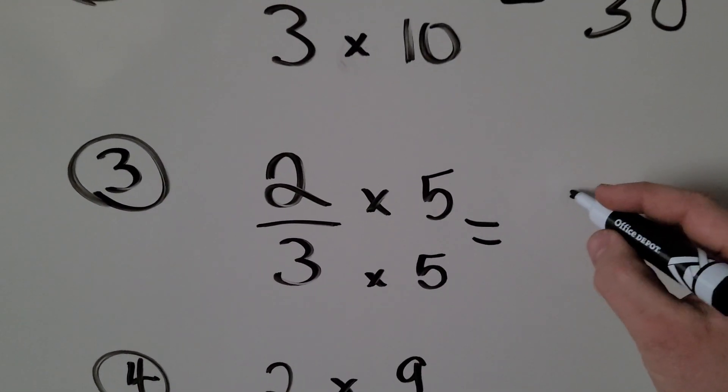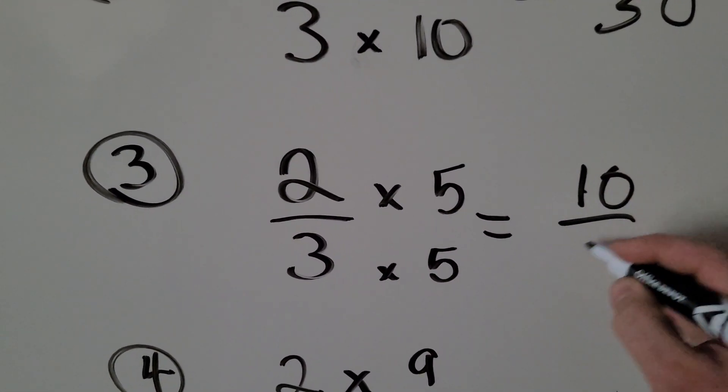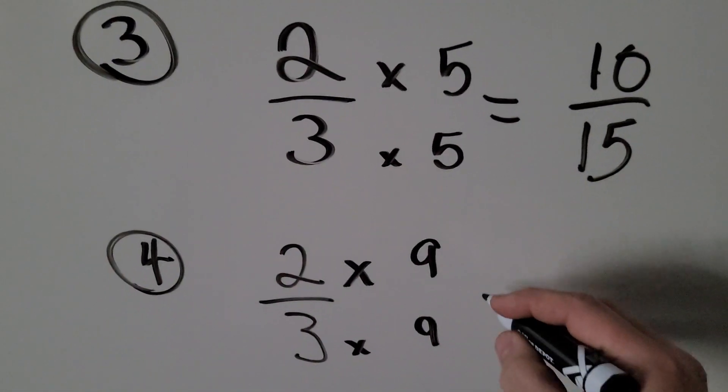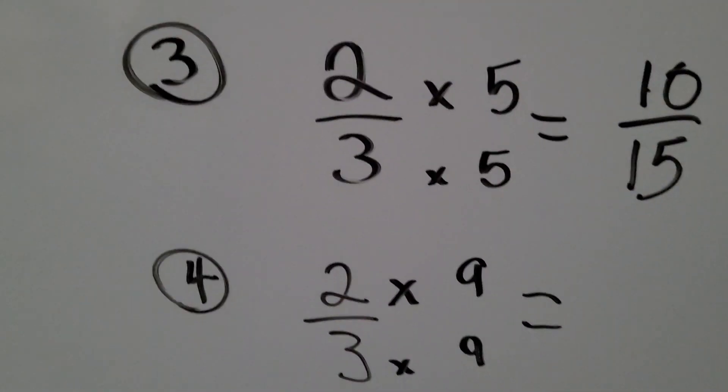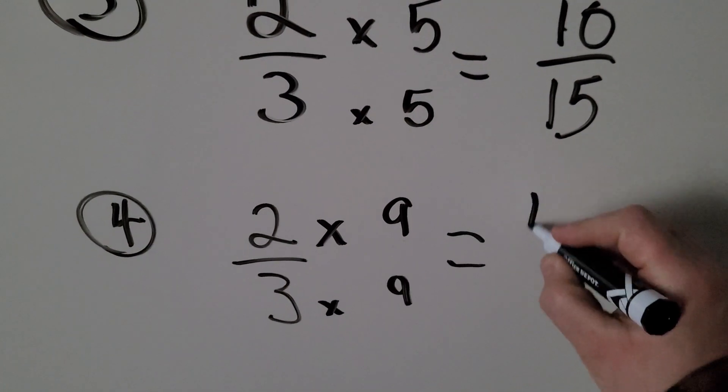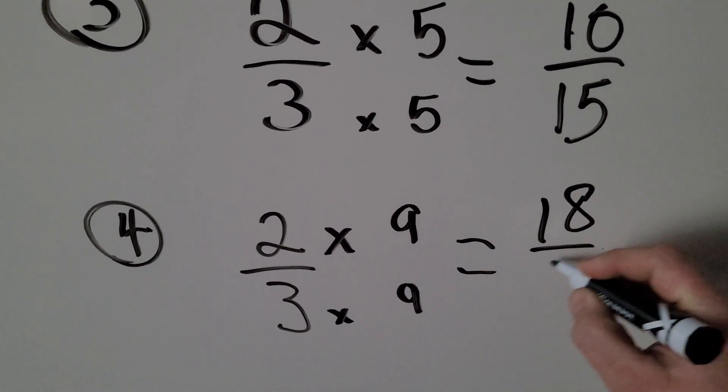Third one times five, ten-fifteenths. Times nine, top and bottom, we get eighteen-twenty-sevenths.